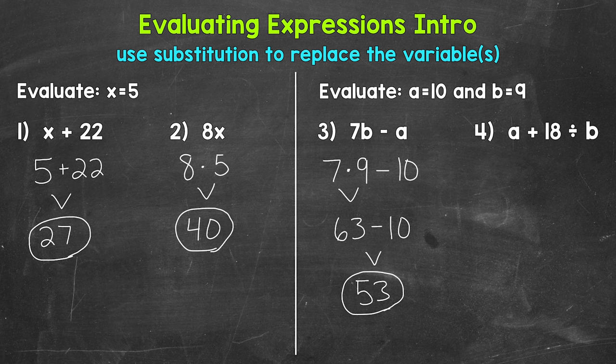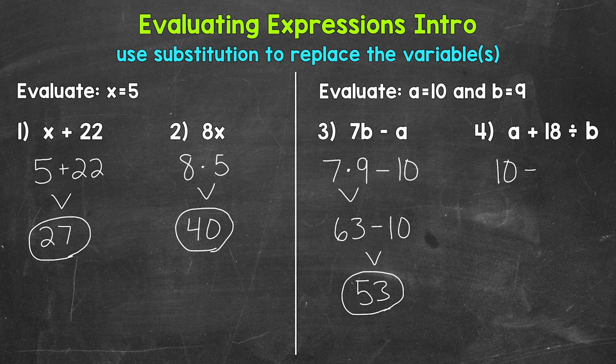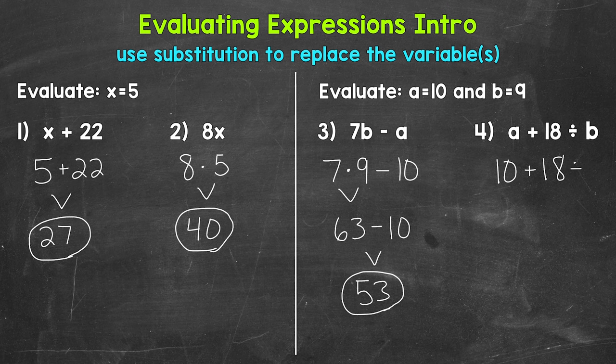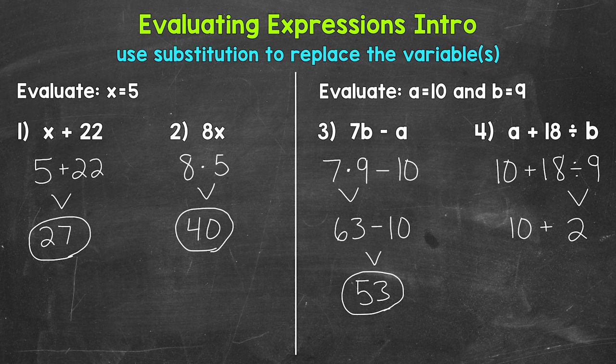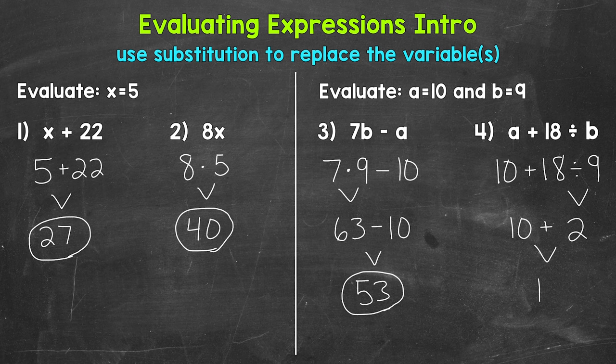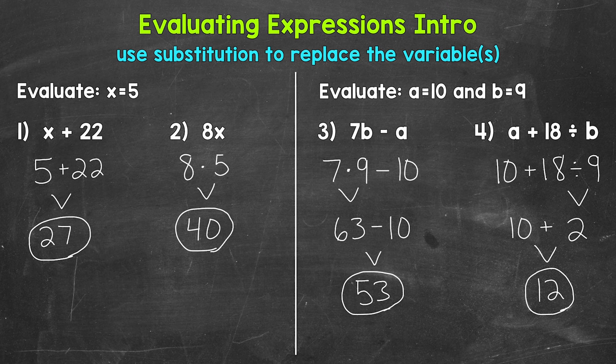Lastly, let's move on to number 4, where we have a plus 18 divided by b. Let's plug in and evaluate. a equals 10, so plug in 10 for a. Plus 18 divided by b—b equals 9, so plug in 9. We have addition and division, so we need to use the order of operations. Division comes before addition, so let's divide first. 18 divided by 9 equals 2. Bring down the addition sign and the 10. We end with 10 plus 2, which equals 12. So the value is 12 when a equals 10 and b equals 9.